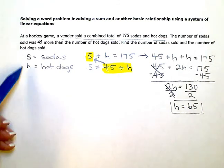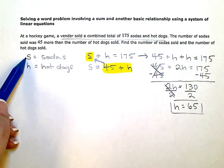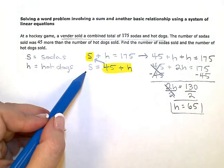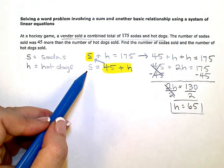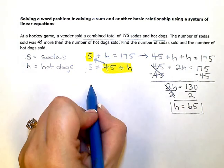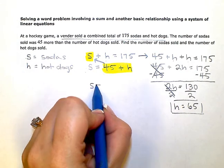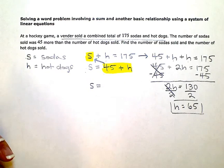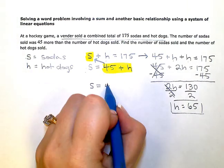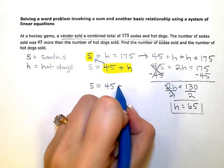Now I need to just figure out how many sodas there were. So I'm just going to use this one here, my bottom equation. I really could use either one, but this one's already set up in S equals form. So the number of sodas is equal to 45 plus H.